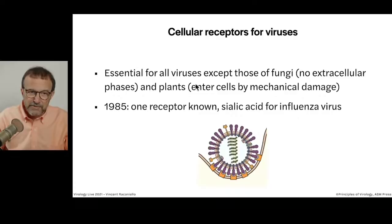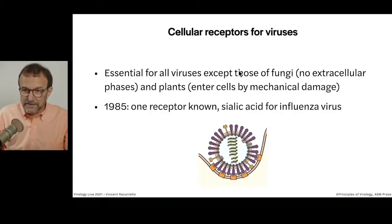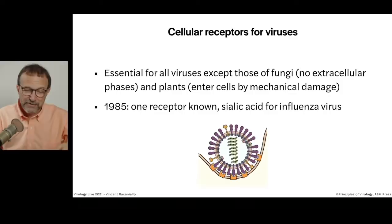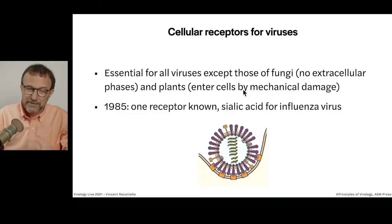Cell receptors for viruses are essential for all viruses in order to reproduce, except viruses of fungi and plants. Interestingly, the viruses of fungi never leave the cell. They simply reproduce within the fungi — like yeasts — and as the cells divide, the viruses partition into the daughter cells. So there are no extracellular phases and they don't need a receptor. Some of these viruses of fungi don't even have capsids — they're just naked nucleic acid. They probably had a capsid at one point but lost it.